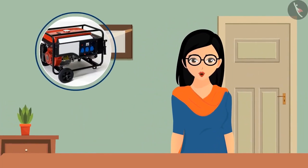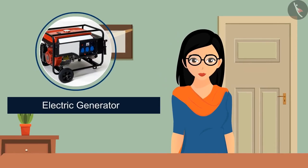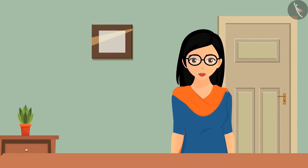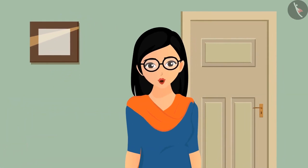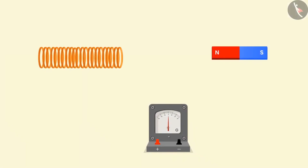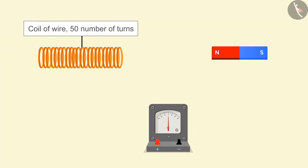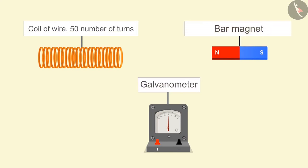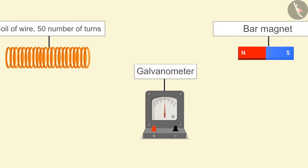Electricity is generated by an electric generator. An electric generator works on the principle of electromagnetic induction. We have heard of electromagnets, but what does electromagnetic induction mean? Let's understand electromagnetic induction with the help of this activity. To perform this activity we need a coil of wire having 50 number of turns, a powerful magnet, and a galvanometer.